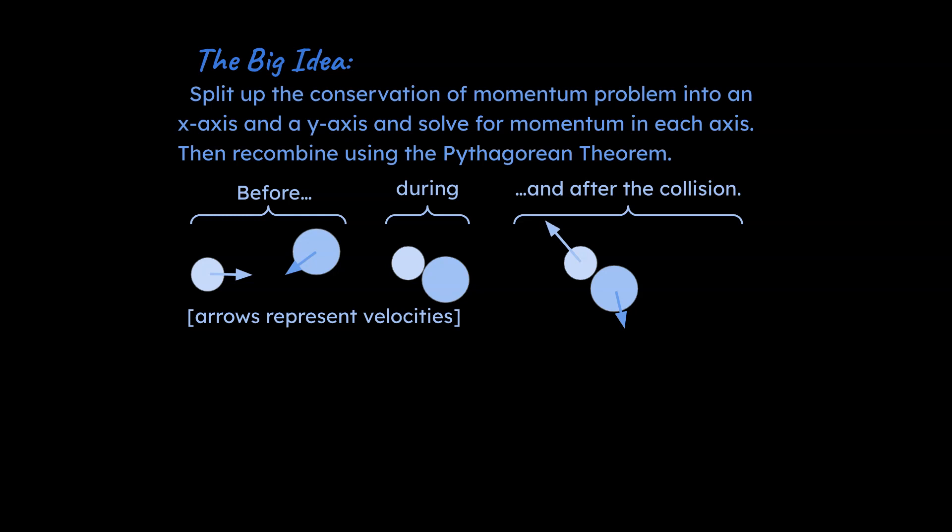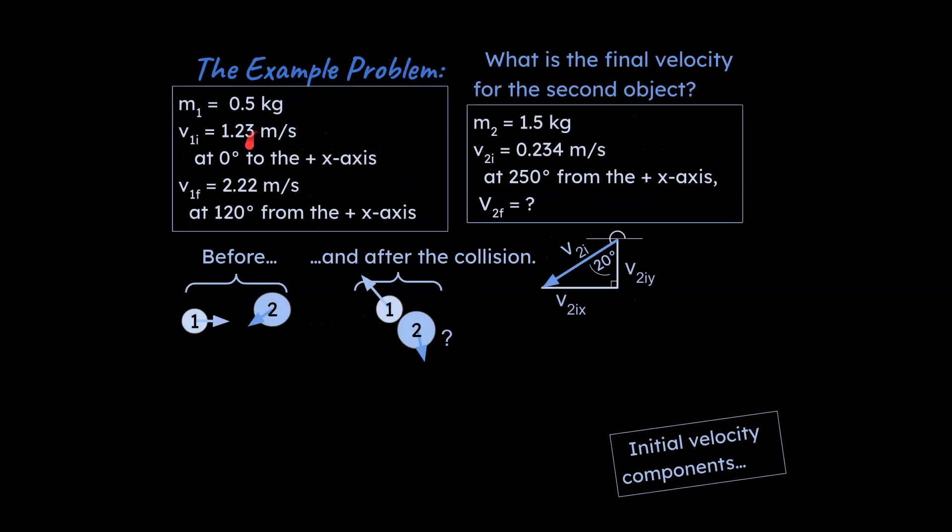I'll show you how to do this, but this is a graphic of the type of problem that we're going to be dealing with today. So you've got two vectors to begin with, during the collision they collide, and then after the collision they're going to have an elastic collision, and they both have velocity vectors here. So let's go ahead and take a look at the example problem.